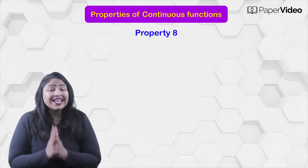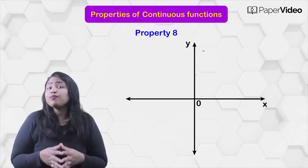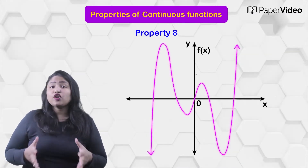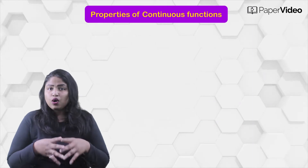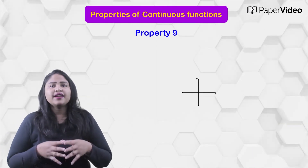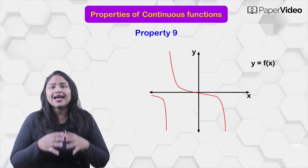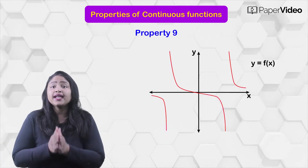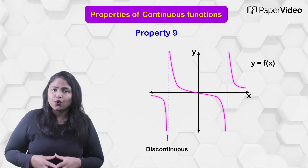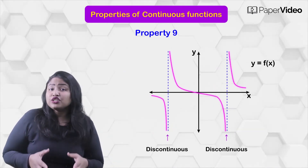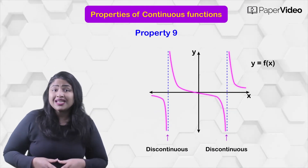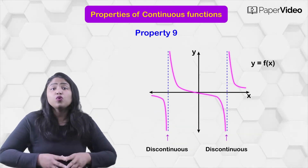According to the eighth property, every polynomial function is continuous at every point of the real line. According to the ninth property, every rational function is continuous at every point where its denominator is different from zero. The function is discontinuous at the points where its denominator is equal to zero.